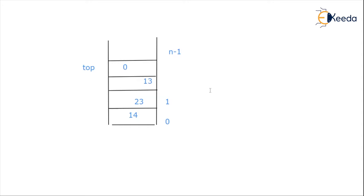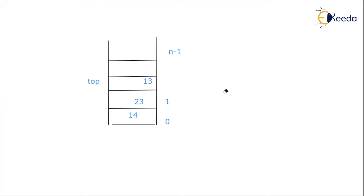The stack is clearly not empty, so top at three is not less than zero and we can proceed. We store the value at stack[top] — which is 0 — into the item variable, and then decrement top from three to two. Now top is at two and the value 0 is no longer referenced by top. If we add one more element, top will increment back to three from two, not from the start. This is how addition and deletion operations work in a stack using array.